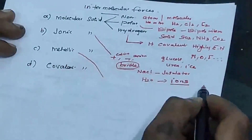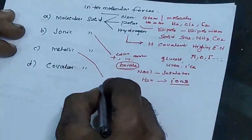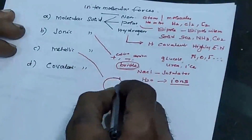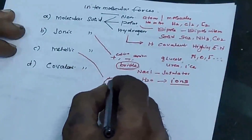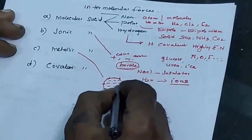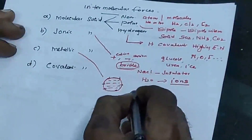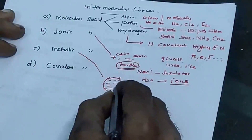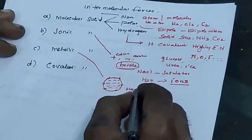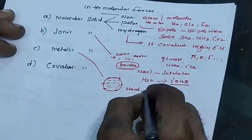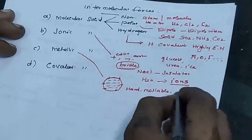In metallic solids, positive ions are immersed in a sea of delocalized electrons. The bond formed is called a metallic bond, within the sphere of influence. Metallic solids are hard, malleable, and ductile in nature.